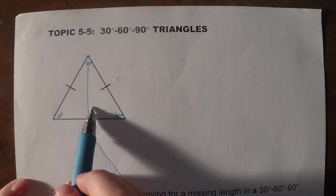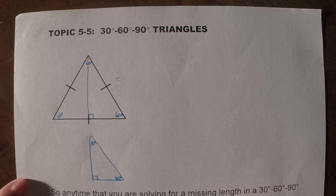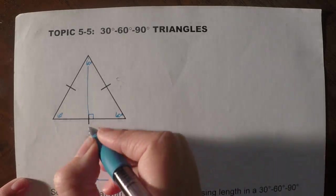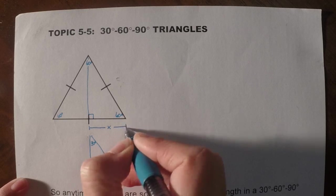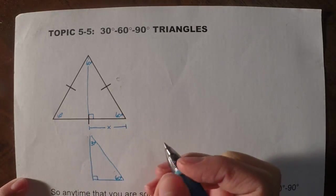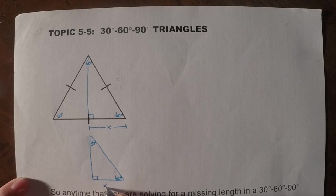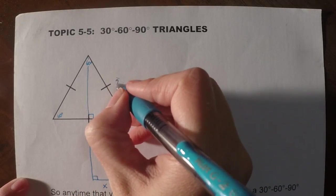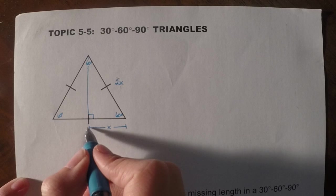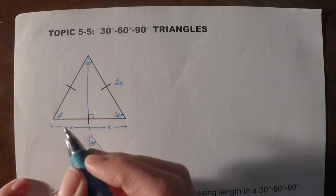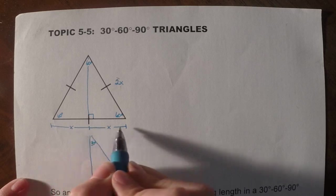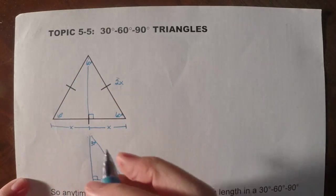So what we're going to do is use Pythagorean Theorem to find the length of the long leg. So what we're going to do is go ahead and call this distance right here x. Well, since it's an equilateral triangle, if this is x here, then this would have to be 2x, because again, that would mean this distance here would be x. And since it's equilateral, it would have to be 2x, 2x, 2x.